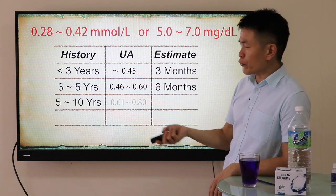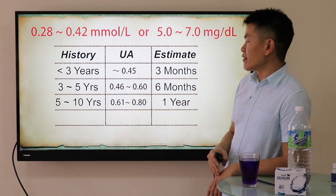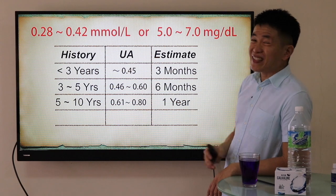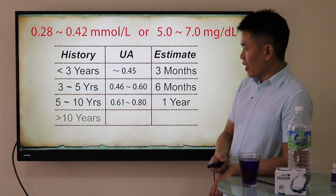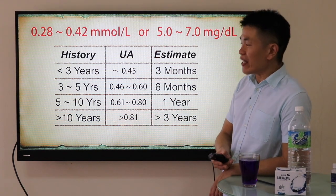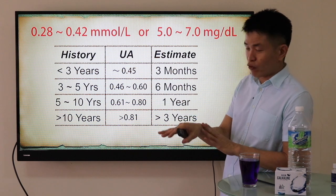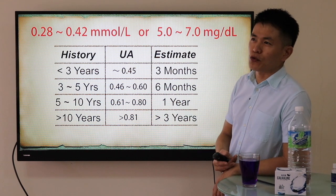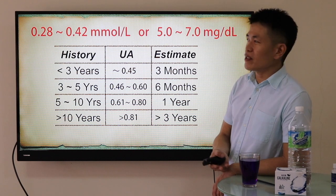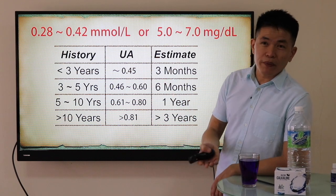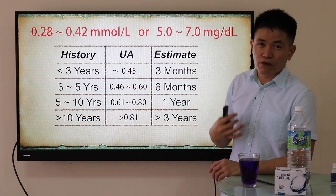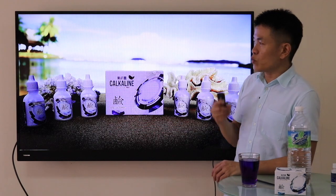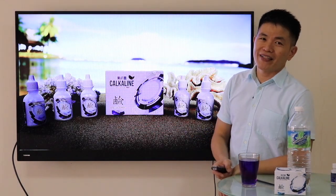If your gout history is five to ten years with uric acid at 0.61–0.8 mmol/L, you may need about one year to see significant changes. If your condition is more than ten years, it may be complicated by tophi stones, and it could take up to three years of consistent use. Results vary depending on individual body metabolism. Overall, Calcline works by flushing out uric acid through ionic calcium alkalinity. Thank you.